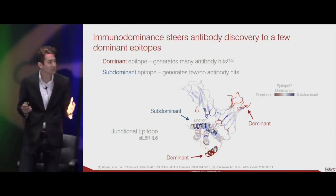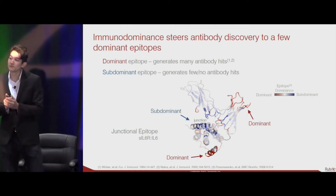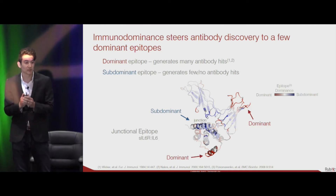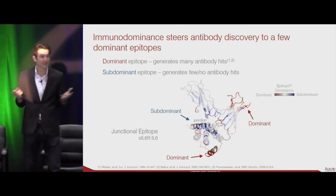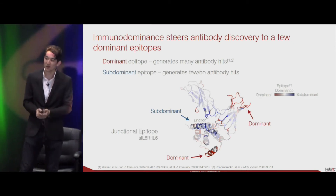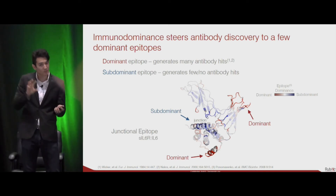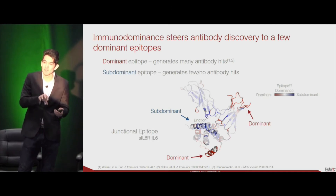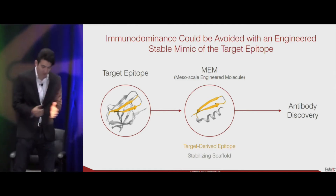If your therapeutic epitope of interest happens to be a dominant epitope — like that shown in red — you're in luck. Conventional antibody discovery technologies will get you many hits for that epitope. If on the other hand your therapeutic epitope is a subdominant site, conventional strategies will generate few to no antibody hits. So what we want to do is develop a platform giving us control over where our antibodies bind, regardless of whether it's at a dominant or subdominant site, thus overcoming the problem of immunodominance.